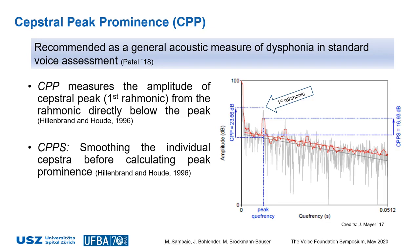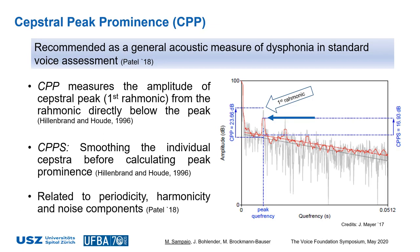The result of the smoothing process is displayed by the red line contour in the picture. There you can see the peak of CPP and, underneath, the peak of CPPS. Both CPP and CPPS are related to periodicity, harmonicity and noise components of a voice signal. We may expect a higher peak prominence with improved signal periodicity or harmonicity, whereas lower peaks are expected with the increase of noise and deterioration of periodicity and harmonicity, such as in audibly dysphonic voices.